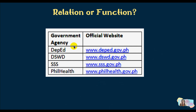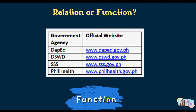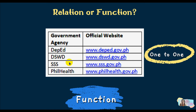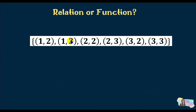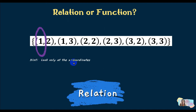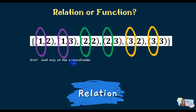Next, a table of government agencies and their official websites. No x value repeats, so the correspondence is one-to-one and this is a function. Then we have ordered pairs: (1,2), (1,3), (2,2), (2,3), (3,2), (3,3). The x values 1, 2, and 3 all repeat, so this is not a function — it is a relation only.